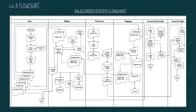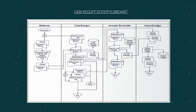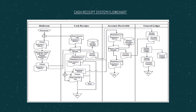For the flowchart, it has a similar explanation to the logical data flow diagram (DFD) but in a different format. For the sales order system flowchart, we have divided it into 6 divisions: sales, billing, warehouse, shipping, accounts receivable, and general ledger. Meanwhile, for the cash receipt system flowchart, we have divided it into 4 divisions: mailroom, cash receipts, accounts receivable, and general ledger.